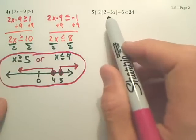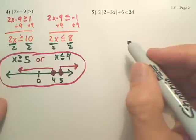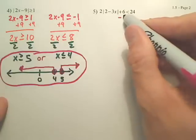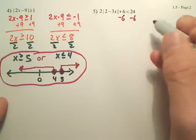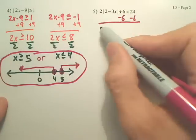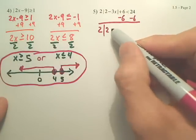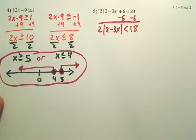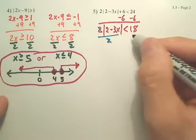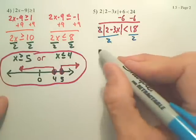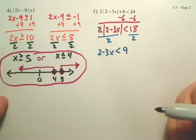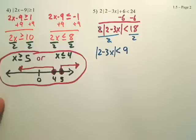Here's another problem. We first need to isolate the absolute values. So the first step is going to be to minus the 6 over. Divide by 2 to get rid of this.